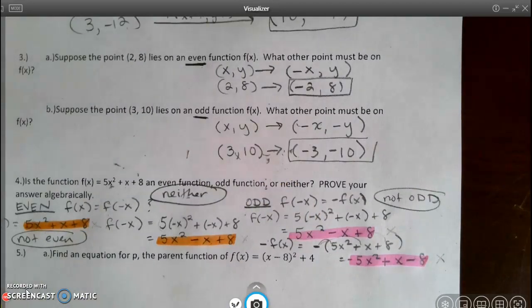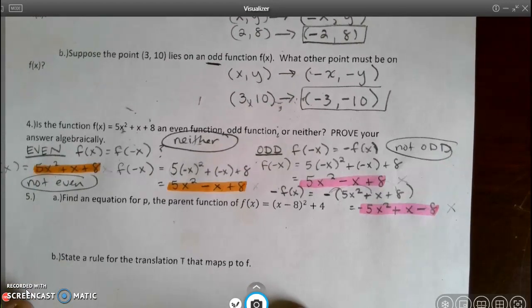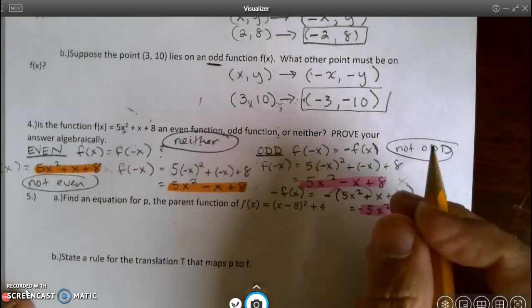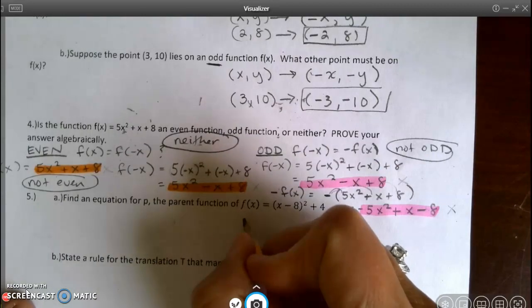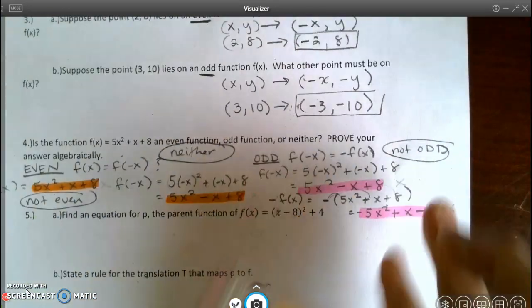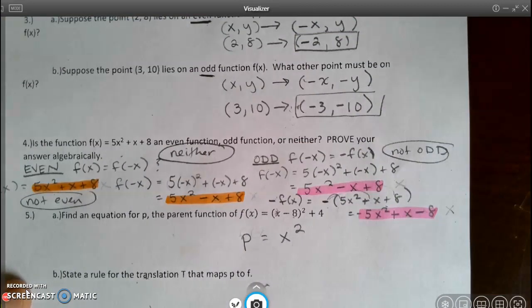Let's go on to number 5. Find an equation for the parent p for the function f(x) equals the quantity (x minus 8) squared plus 4. Whenever I have something squared, that's a quadratic. So my parent function is, I guess they said they wanted me to use p. So my parent p equals x squared. That would be my parent function.